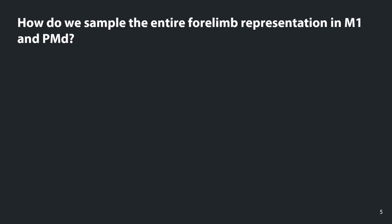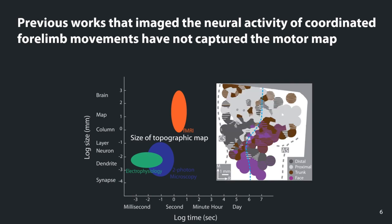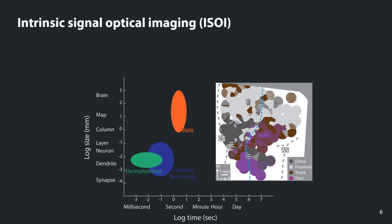To sample the entire forelimb representation in M1 and PMD without bias, we are going to use brain imaging. Previous works have imaged neural activity while primates performed coordinated forelimb movements, but they used techniques such as fMRI, which has too coarse a spatial resolution to capture differentiation between the arm and hand representation in M1 or PMD, and two-photon microscopy, which has too fine a spatial resolution to comprehensively sample both representations. So we are going to use intrinsic signal optical imaging, or ISOI, which has the appropriate spatial resolution to differentiate activity in both the arm and hand representation in M1 and PMD.